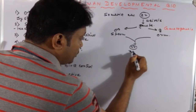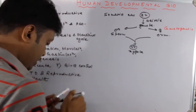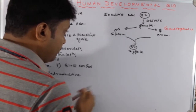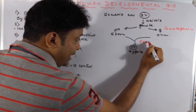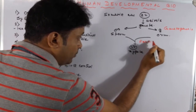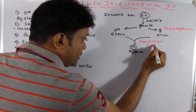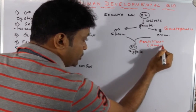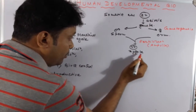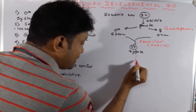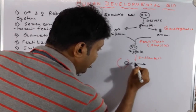By the process of fertilization a diploid zygote is formed. Fertilization actually takes place in the ampulla of the fallopian tube — that is the site of fertilization. Just after the formation of the zygote, implantation occurs, and the zygote undergoes cleavage.